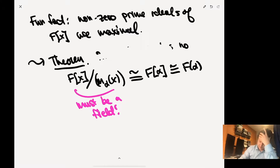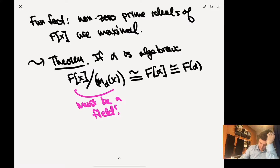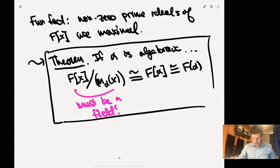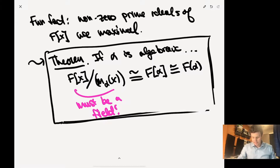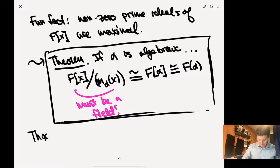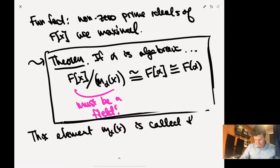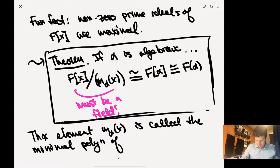If alpha is algebraic, then evaluation at alpha has non-trivial kernel — that's exactly what being algebraic means. This element M_alpha(x) is called the minimal polynomial of alpha.